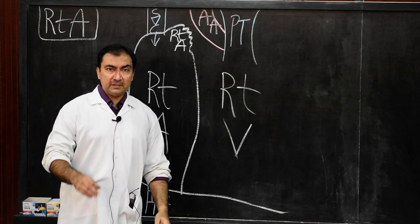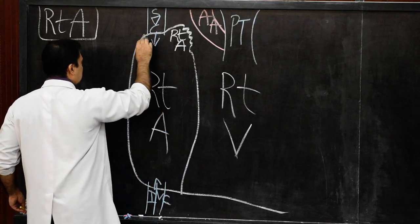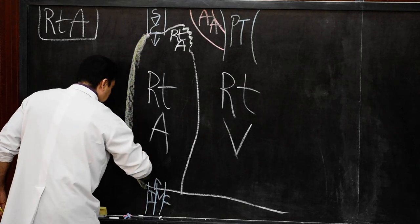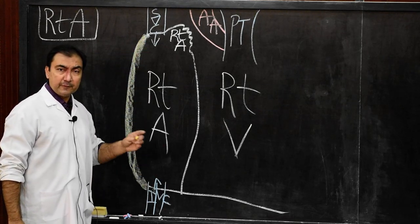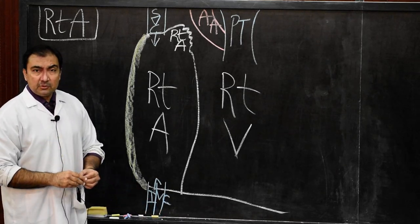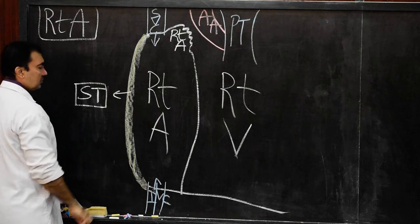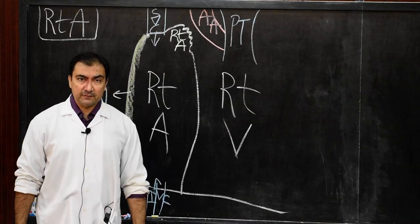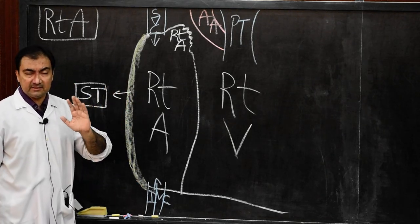The second most important feature of the right atrium is a narrow sulcus along the right border. This narrow sulcus extends from the superior vena cava orifice to the inferior vena cava orifice on the right border, and it is known as the sulcus terminalis. It is a narrow muscular ridge-like sulcus present on the right border of the right atrium.